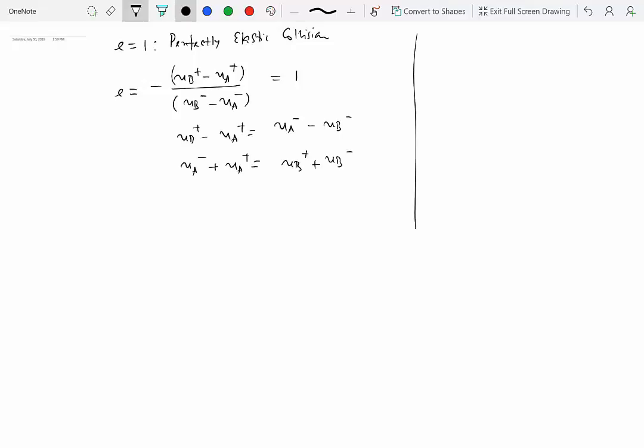We also know that for the impact between two particles on a frictionless surface, momentum is conserved. So we have MA VA minus plus MB VB minus equals MA VA plus plus MB VB plus.